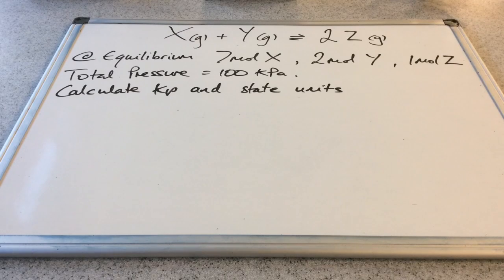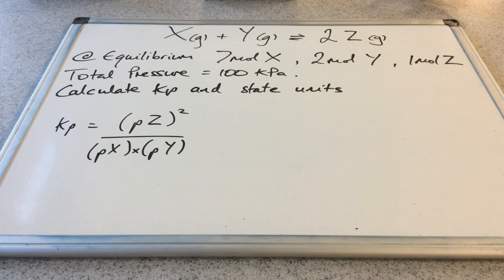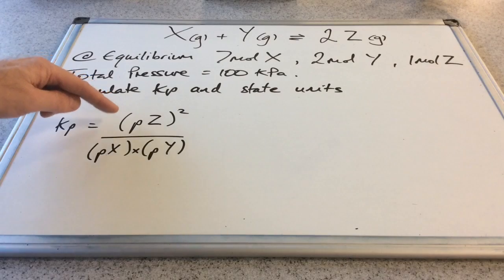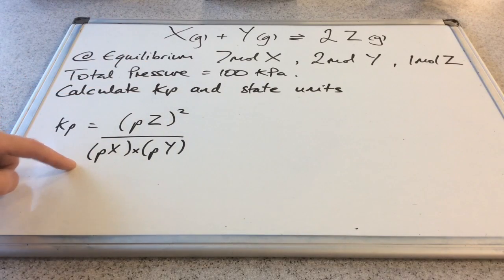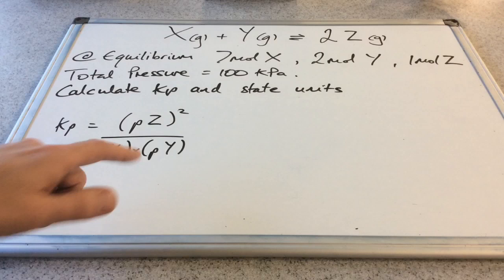We've got gaseous X and gaseous Y in equilibrium with 2 moles of gaseous Z. At equilibrium we've got 7 moles of X, 2 moles of Y, and 1 mole of Z. The total pressure is 100 kilopascals, and from all of that information we can calculate Kp and state its units. The first thing I would do is write the expression for Kp: it's the partial pressure of Z squared, all over the partial pressure of X multiplied by the partial pressure of Y. Ultimately, we need to know the partial pressures of the three components.